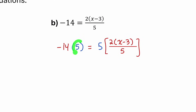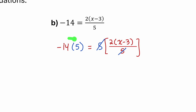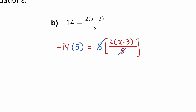Because I multiplied both sides by 5, the equation is still balanced. On the right side, I have a 5 divided by 5, which is 1, so I can cancel those 5s out on the right side. On the left, I have negative 14 times 5, which is negative 70. And on the right, I just have 2 times x minus 3.